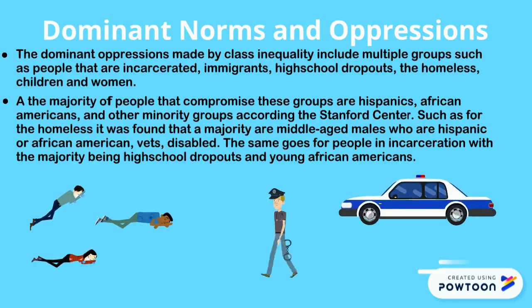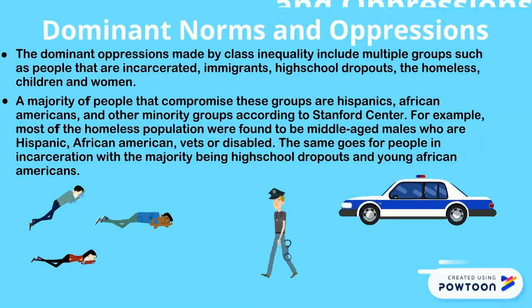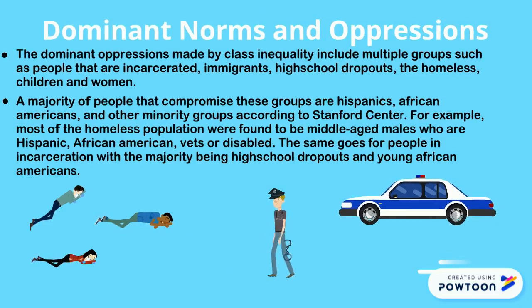The dominant oppressions made by class inequality include multiple groups such as people that are incarcerated, immigrants, high school dropouts, the homeless, children, and women. The majority of people in these groups are Hispanics, African Americans, and other minority groups, according to the Stanford Center. For example, most homeless were found to be middle-aged males who are Hispanic, African American, veterans, or disabled. The same goes for people in incarceration, with the majority being high school dropouts and young African Americans.